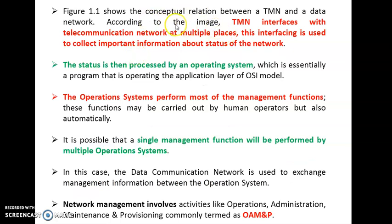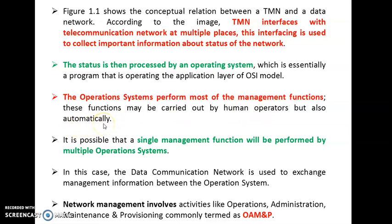According to the image, TMN interfaces with the telecommunication network at multiple places. This interfacing is used to collect important information to understand the status of the network. This status is then processed by the OS, where OS is essentially a program operating at the application layer of the OSI reference model. The OS performs the majority of management functions, which may be carried out by a human operator or done automatically. DCN plays a major role to exchange information among multiple OS.